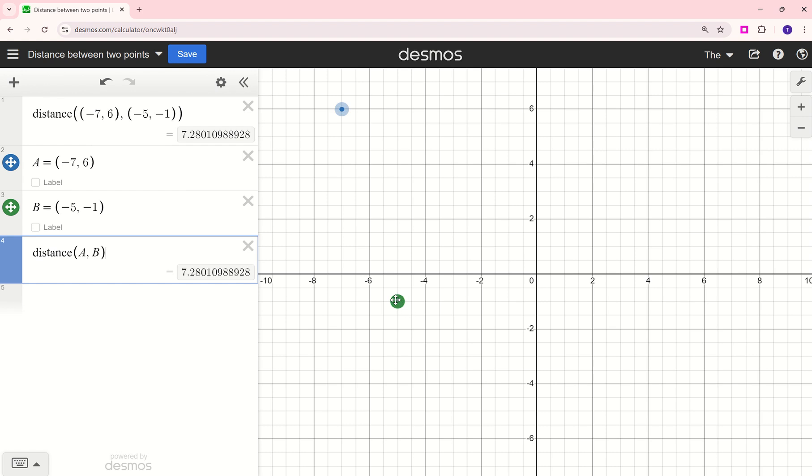Here's point A, it's blue, and here's point B, it's green. So the distance between these two points is 7 and 28 hundredths.